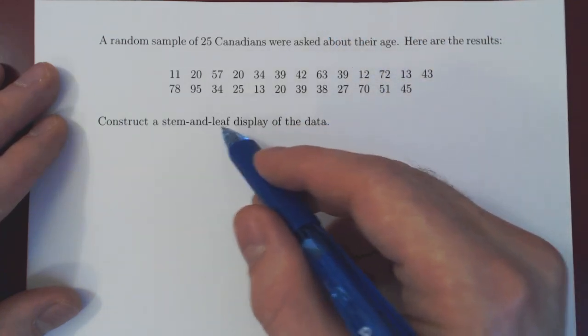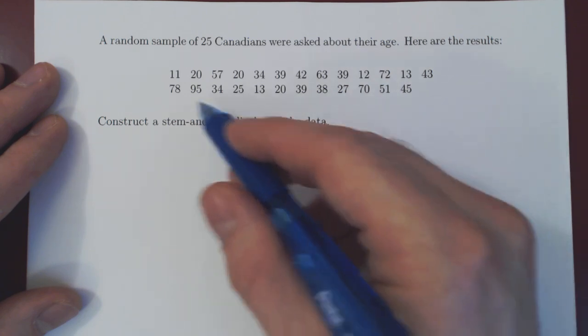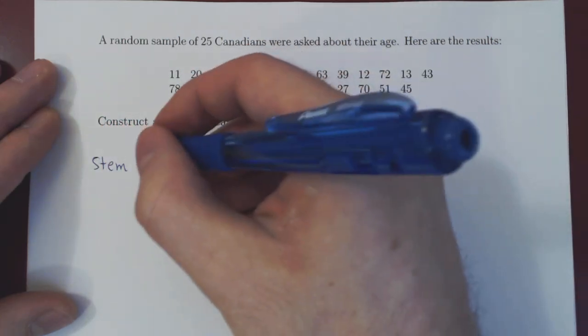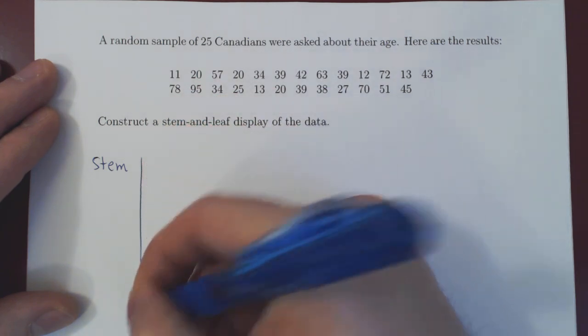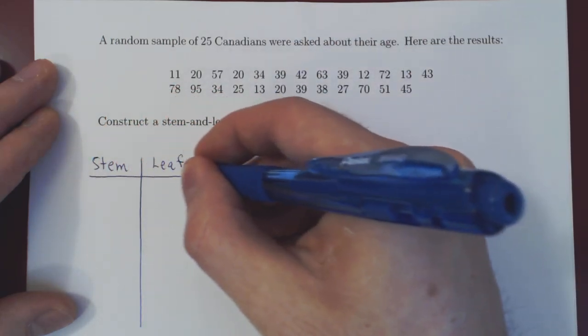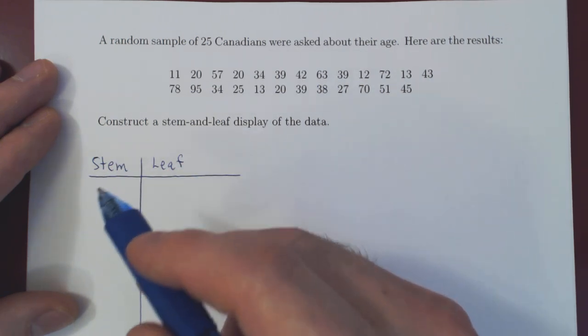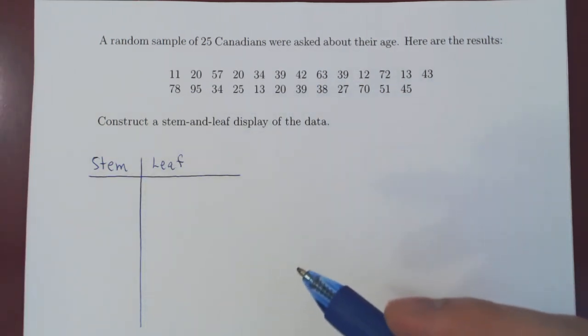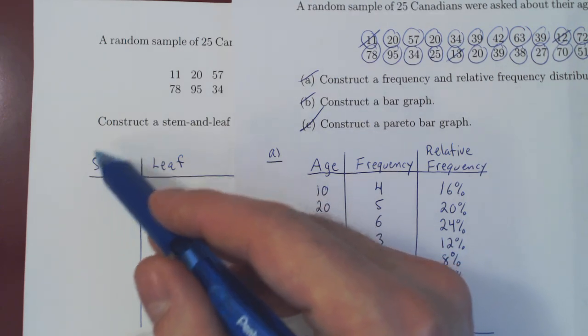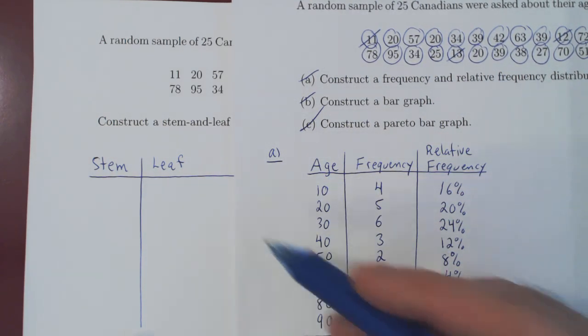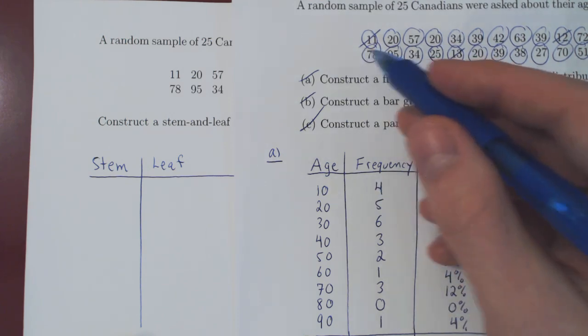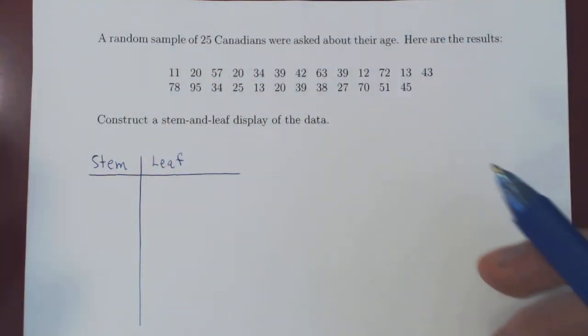So let's see how this works out. There are two parts to a stem and leaf display. Clearly, as the name implies, there is a stem part and there is a leaf part, just like a tree. So the stem and there is a leaf. Now the idea here is that the column for the stem plays the same role as a column for the age in the previous problem for the distribution table. So this will replace our column for the categories, for the ages.